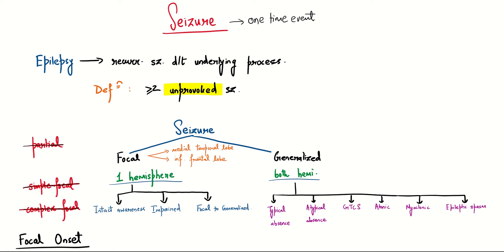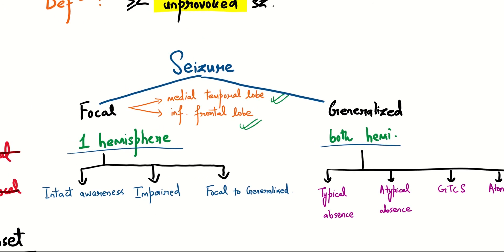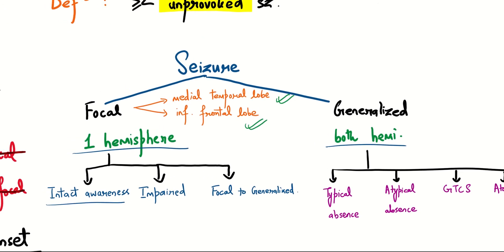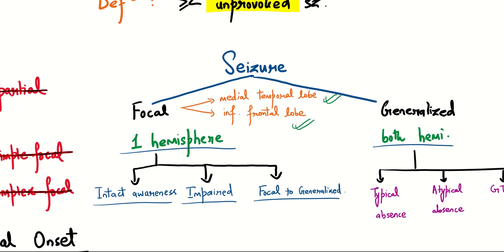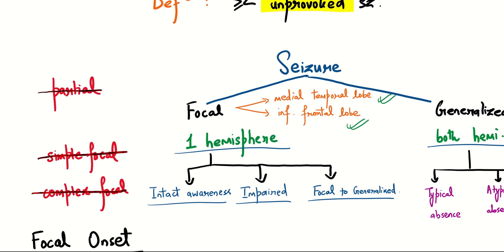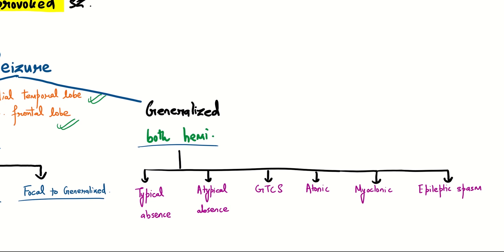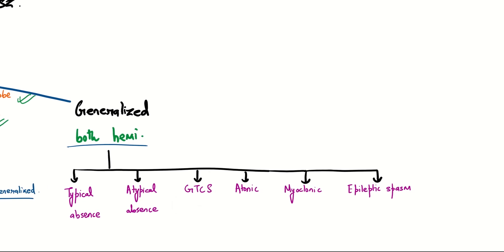Focal seizures originate from either the medial temporal lobe or the inferior frontal lobe. There are three types of focal seizure: intact awareness, impaired awareness, and focal to generalized seizure. Terms like partial seizure, simple focal seizure, and complex focal seizure are no longer used. In generalized seizure, we have typical absence, atypical absence, generalized tonic-clonic seizure, atonic seizure, myoclonic seizure, and epileptic spasm.